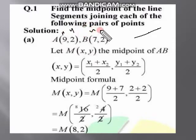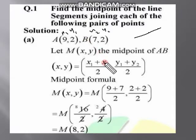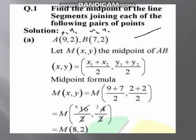آپ نے x کا نام دینا ہے اور y کا — چونکہ یہ پہلا order pair ہے تو یہ x1, y1 ہو جائے گا اور دوسرے order pair کے دونوں x2, y2 ہو جائیں گے۔ آپ کے پاس x1 ہے 9 اور x2 ہے 7، تو 9 plus 7 equal to 16، 16 کو 2 پر divide کریں گے تو x coordinate آ گیا 8۔ اس کے بعد y1 plus y2: 2 plus 2 equal to 4، 4 کو 2 پر divide کریں گے تو y coordinate آ گیا 2۔ اس طریقے سے آپ نے یہ midpoint formula یاد کر لینا ہے۔